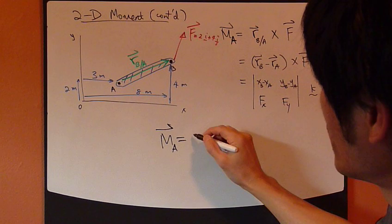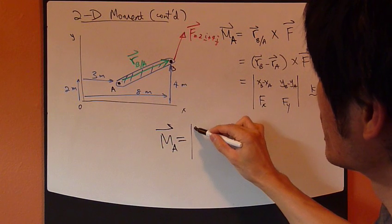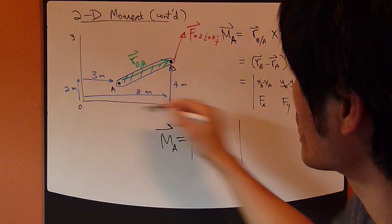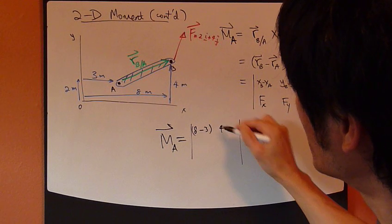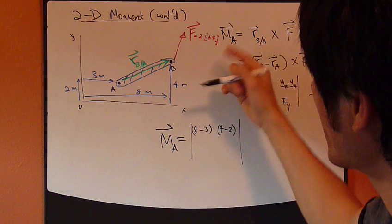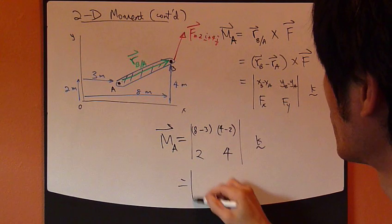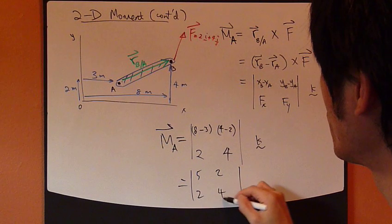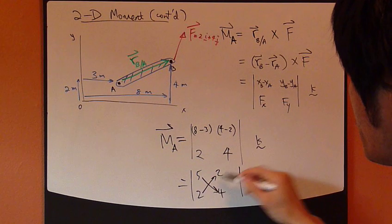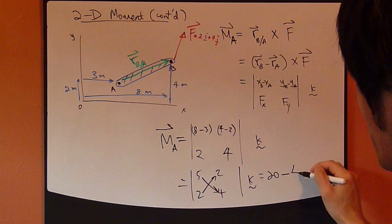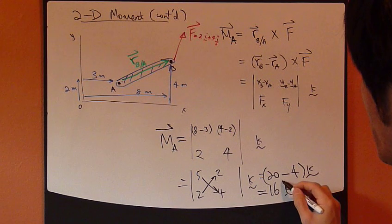So X_B minus X_A, X_B is 8 meters minus X_A is 3. Y_B minus Y_A, Y_B is 4 minus Y_A is 2. F_X is 2, F_Y is 4. So 5, 2, cross multiply with 2, 4. So 5 times 4 is 20 minus 4, so 16K. This is the answer.